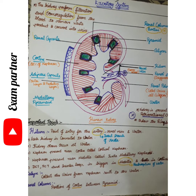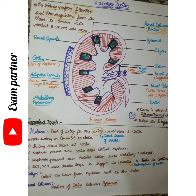This is an important NEET question. The renal artery is directly connected to the aorta. The aorta is one of the main parts of the heart. If you look at the structure of the heart, you can see the aorta. The renal artery is directly connected to the aorta of the heart.